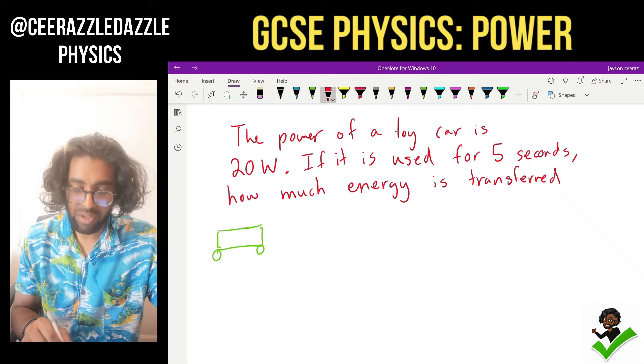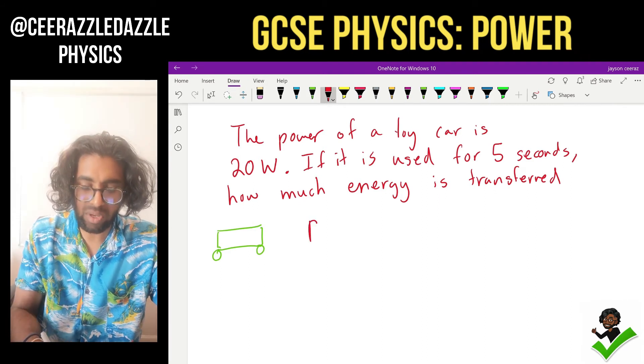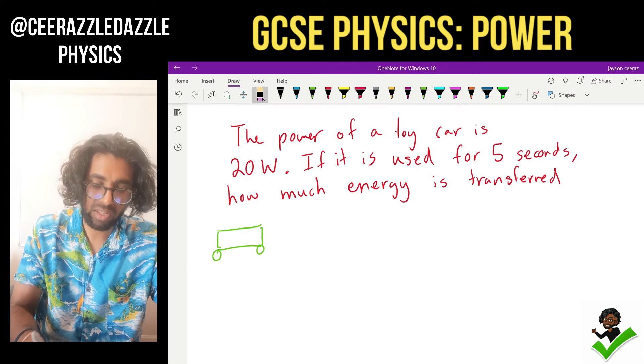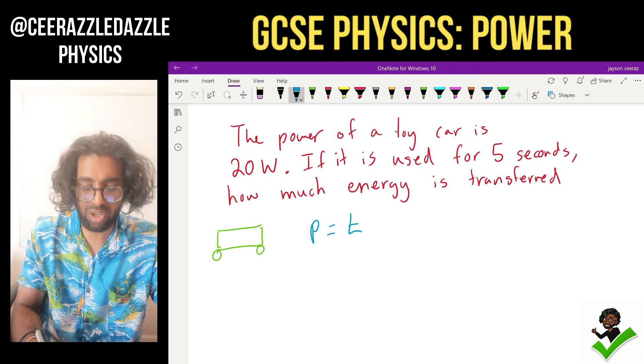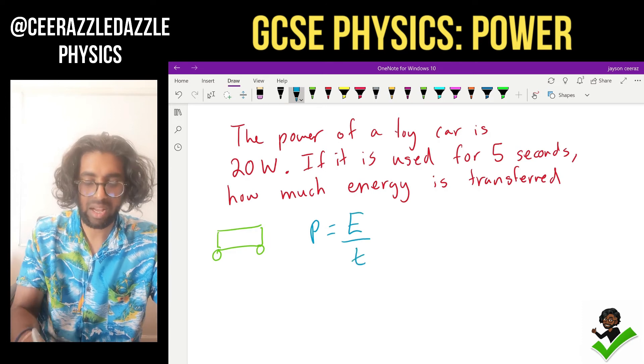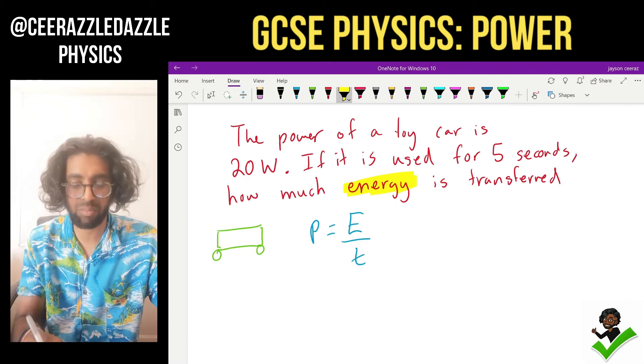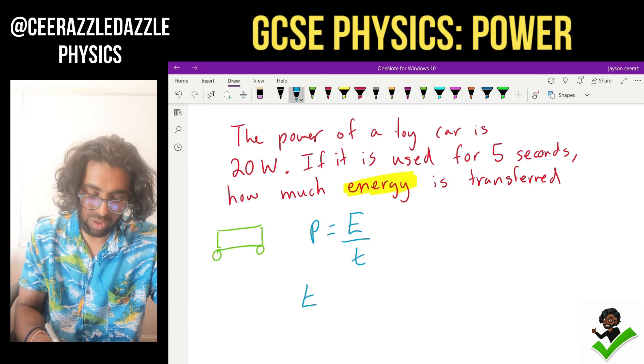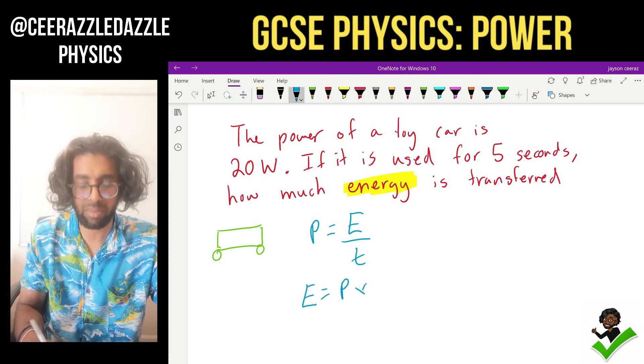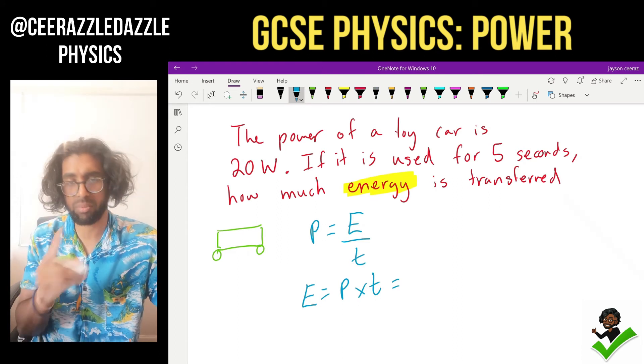If you're asked to work out the energy, we've got to rearrange that formula. So we have power is equal to energy over time. I'm trying to work out the energy transferred. So I need to work out the energy. I've got to make E the subject of the formula. So moving the T up. Energy is equal to the power multiplied by the time.